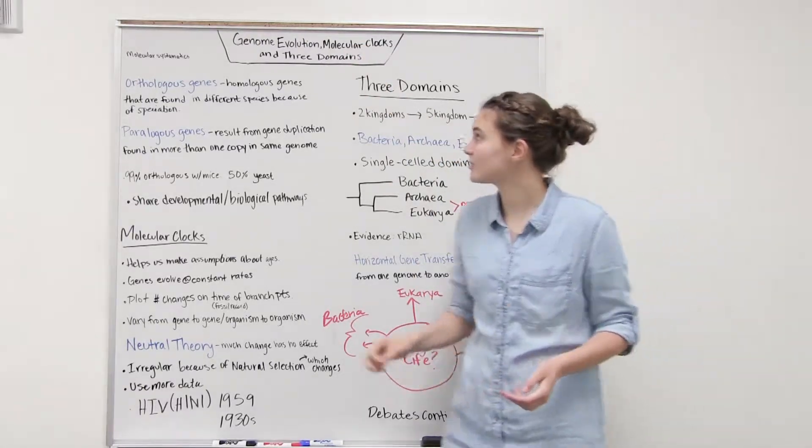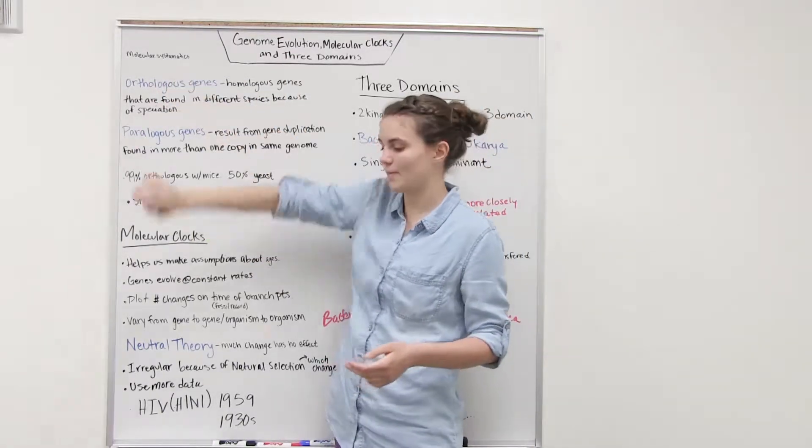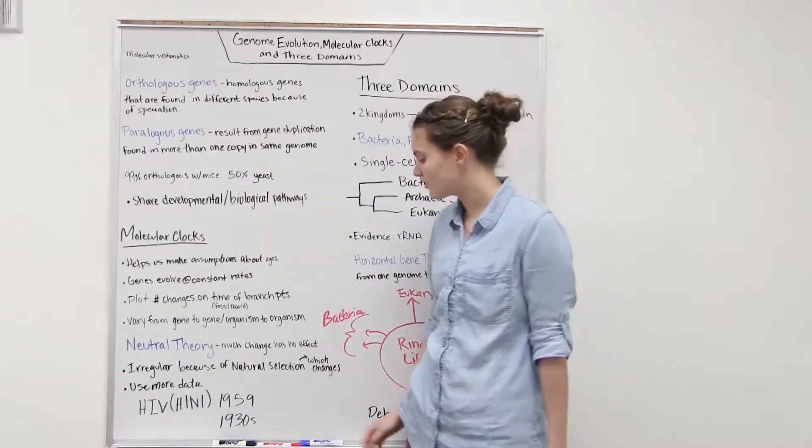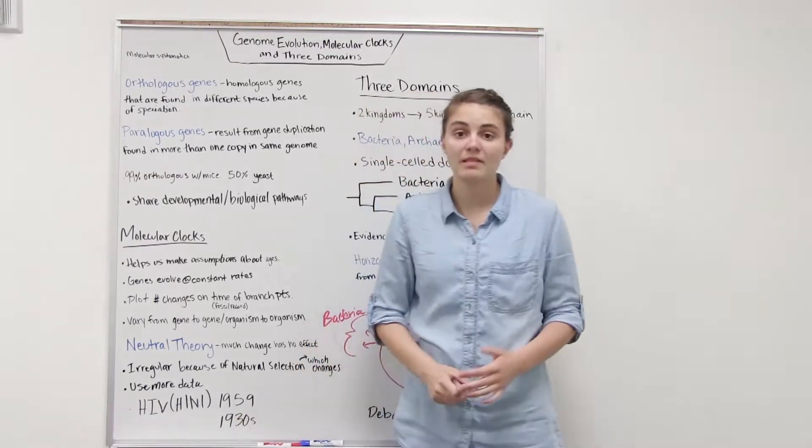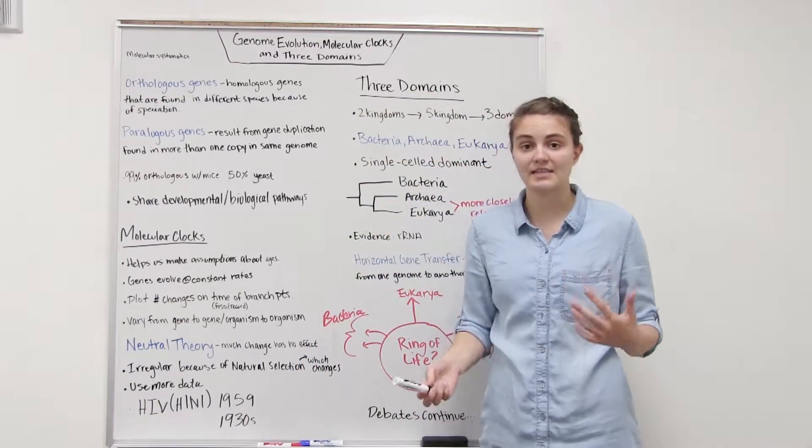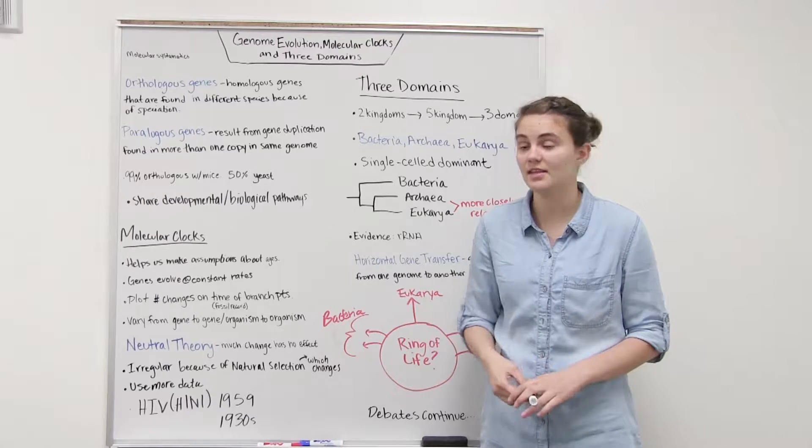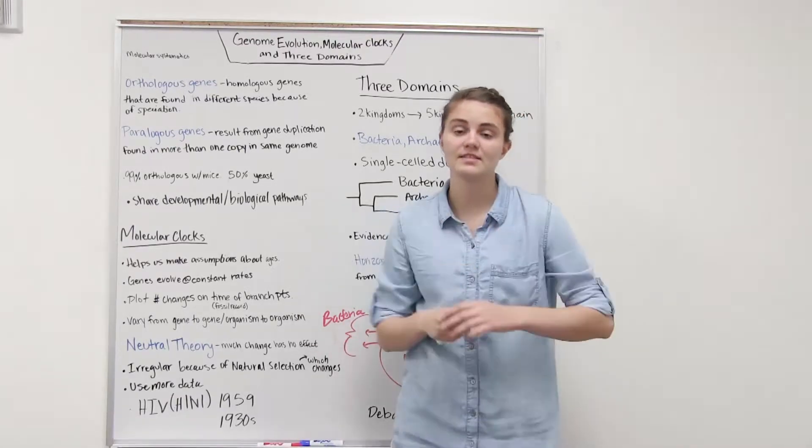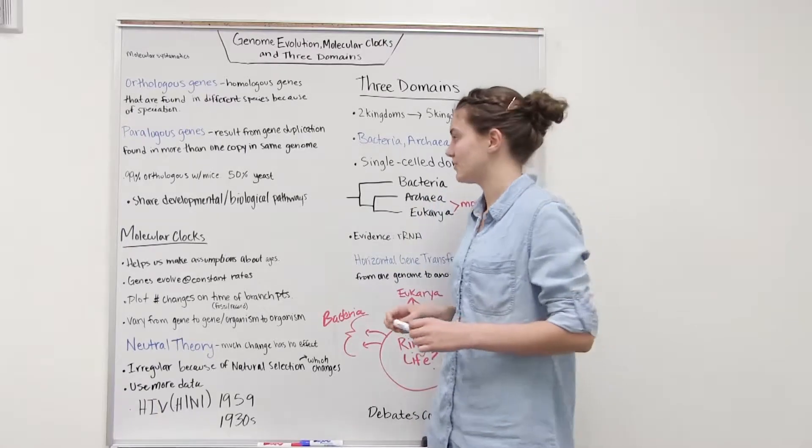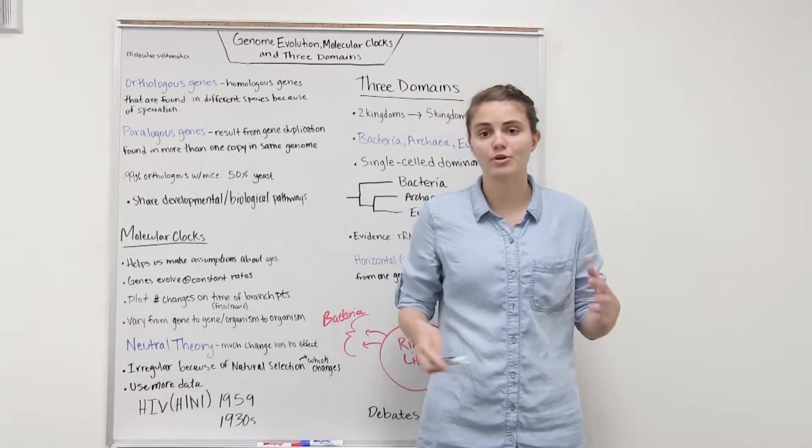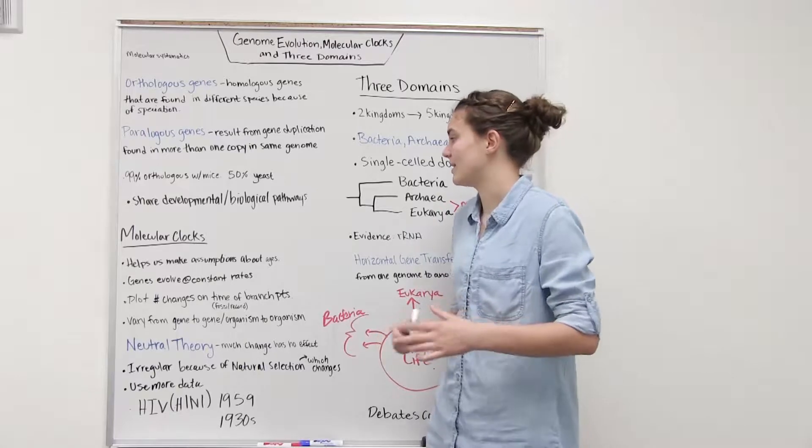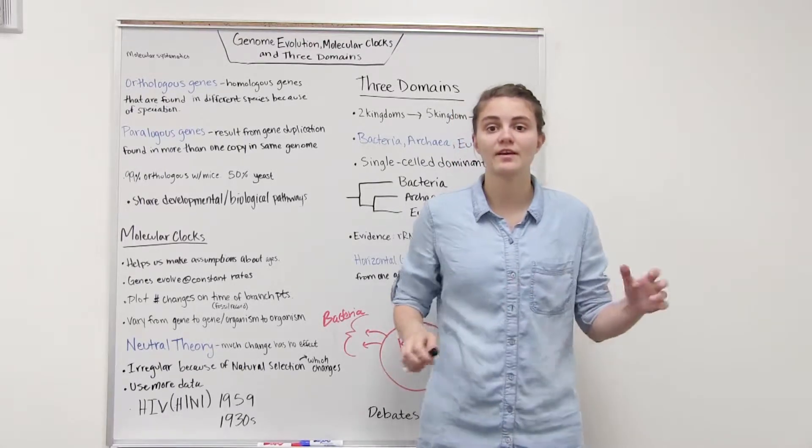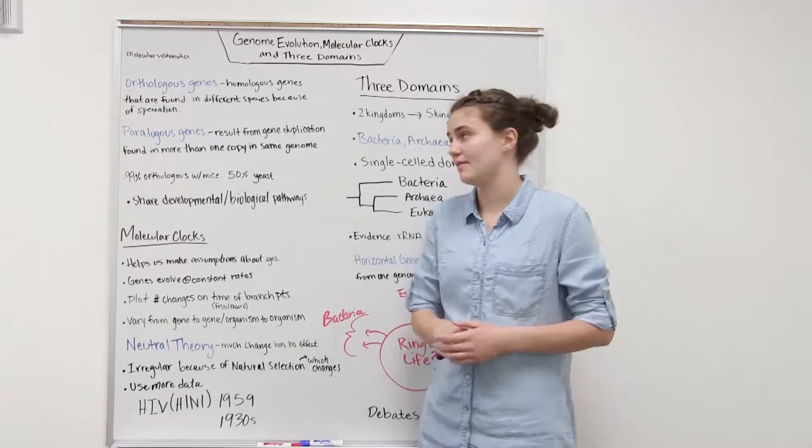To start off when we're talking about Genome Evolution, we need to talk about molecular systematics. Molecular systematics is using molecular data such as nucleotide sequences in DNA and the genome to look at the differences and compare different species or groups of species when we're making phylogenetic trees or trying to find evolutionary relationships.